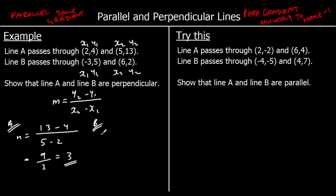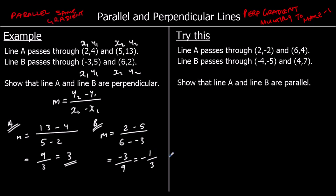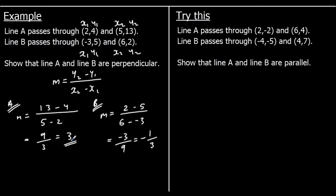For line B: 2 minus 5 over 6 minus negative 3. So 2 minus 5 is negative 3, and 6 minus negative 3 means 6 plus 3 — so it's negative 3 over 9, which is negative one third. Are they perpendicular? 3 times minus a third equals negative 1, so they are perpendicular. Negative one third is the negative reciprocal of 3.